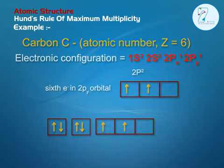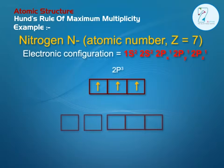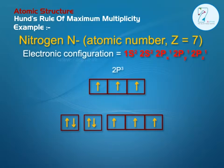Nitrogen (N): Atomic number Z is equal to 7. Electronic configuration is equal to 1s2, 2s2, 2px1, 2py1, 2pz1.